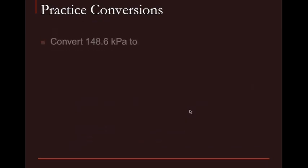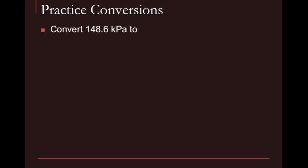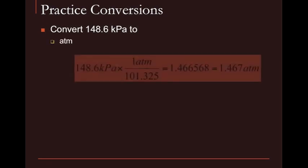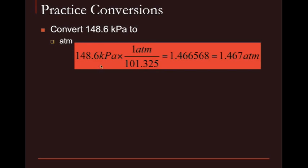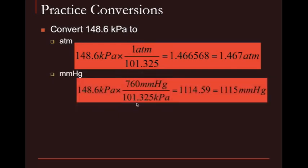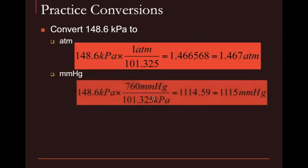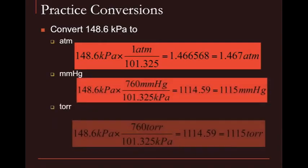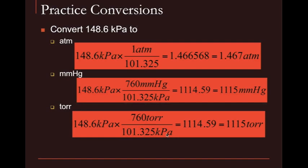Another example: to convert 148.6 kilopascals to atmospheres, write down kilopascals on the bottom and 1 atmosphere on the top, multiply the top and divide by the bottom. To convert to millimeters of mercury, put kilopascals on the bottom and 760 millimeters of mercury on the top. To convert to torr, put kilopascals on the bottom and torr on the top, then multiply.